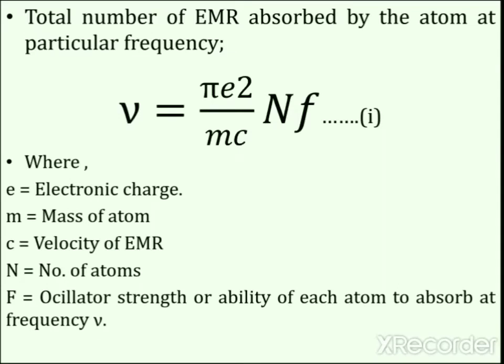The total number of electromagnetic radiation absorbed by the atom at a particular frequency nu is equal to (π e² / mc) times nf. This is equation number 1.